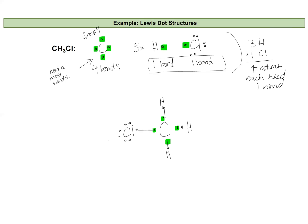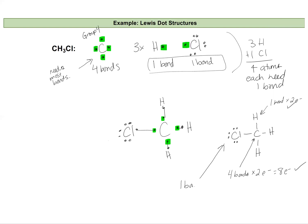If I wanted to redraw this cleanly, I have three lone pairs on chlorine bonded to carbon, which has three bonds to hydrogen. Double checking: each hydrogen has one bond with two electrons, satisfying the duet rule. Carbon has four bonds each with two electrons, satisfying the octet rule. Chlorine has one bond with two electrons and three lone pairs each with two electrons — eight electrons total, following the octet rule. This is a reasonable structure.